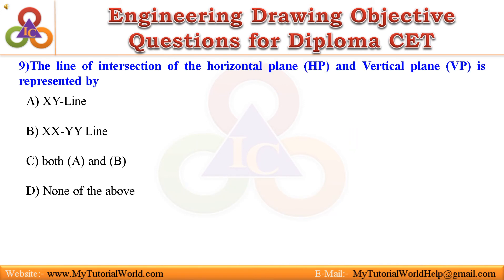Question 9: The line of intersection of the horizontal plane (HP) and vertical plane (VP) is represented by — A. Z line, B. XY line, C. Both A and B, D. None of the above. Answer is Z line.